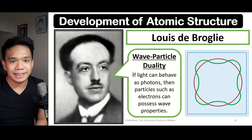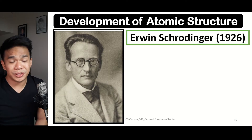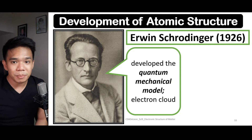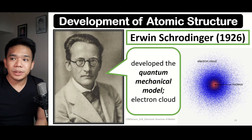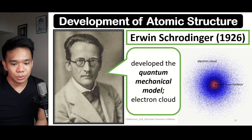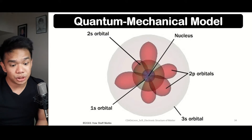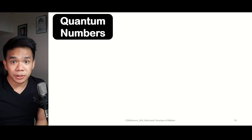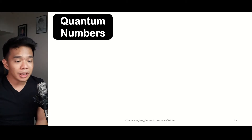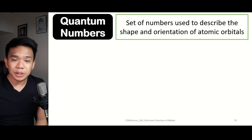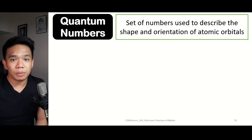From the idea of Louis de Broglie comes another scientist, Erwin Schrödinger, famously known for the quantum mechanical model or the electron cloud, in which electrons can be found within a given area around the nucleus. The main idea is that electrons can be located within certain orbitals with varying shapes and orientations. The equations made by Erwin Schrödinger to propose this model have been supported through the quantum numbers, which refer to the set of numbers used to determine the shape and orientation of the atomic orbitals.